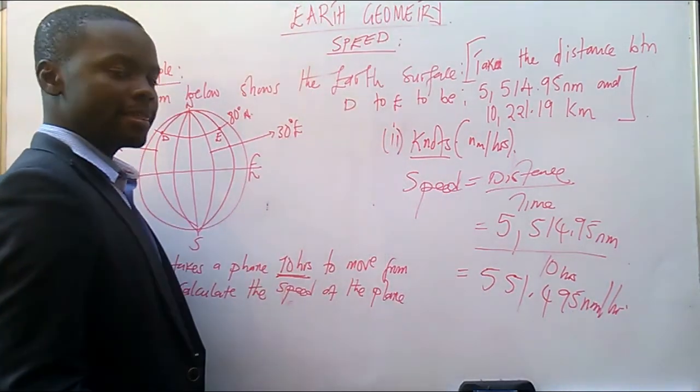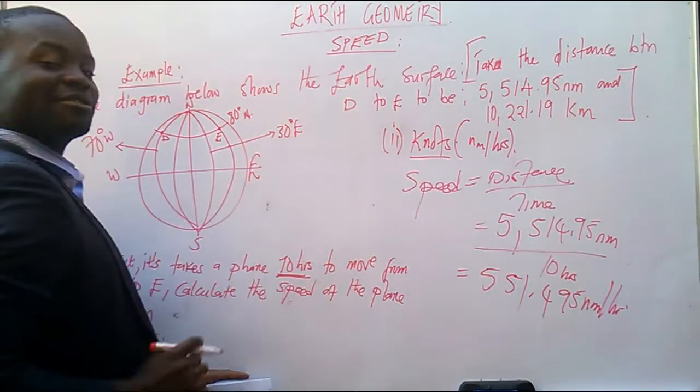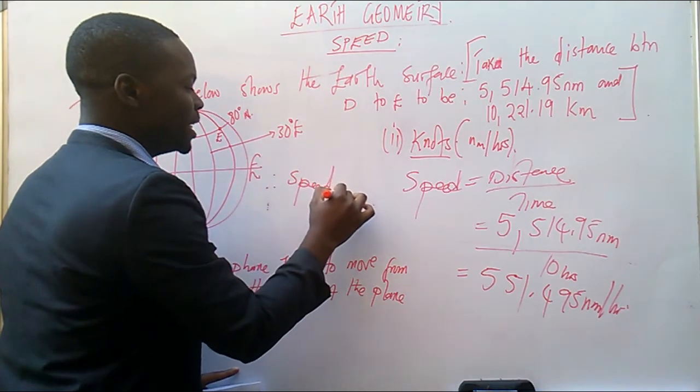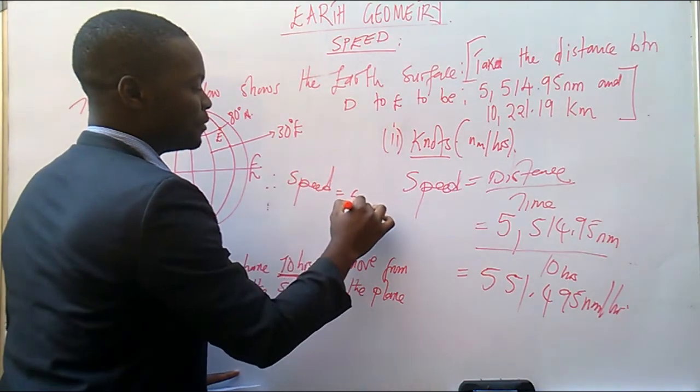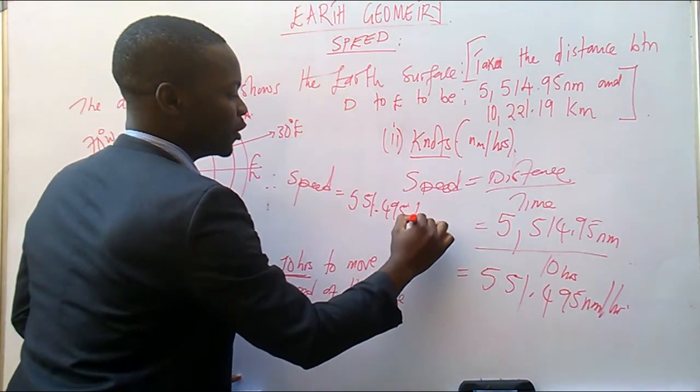Now, I said that nautical miles per hour is the same as what? Knots. Therefore, we are going to say, let me enjoy it from here. Therefore, speed is equal to 551.495 knots.